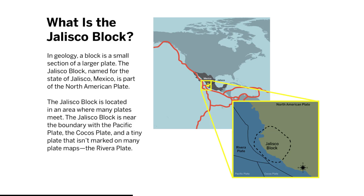What is the Jalisco block? In geology, a block is a small section of a larger plate. The Jalisco block, named for the state of Jalisco, Mexico, is part of the North American Plate. The Jalisco block is located in an area where many plates meet. It is near the boundary with the Pacific Plate, the Cocos Plate, and a tiny plate that isn't marked on many plate maps — the Rivera Plate.